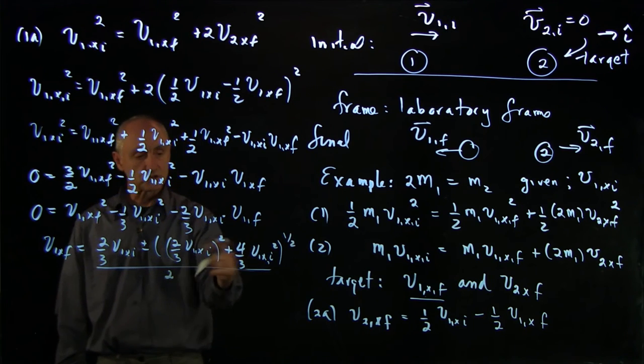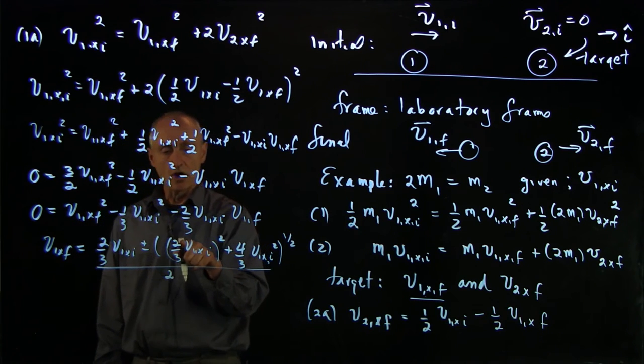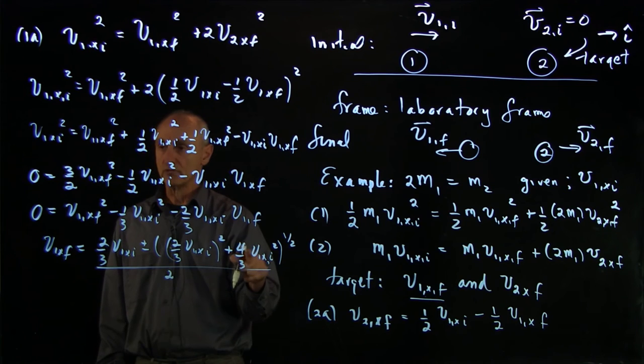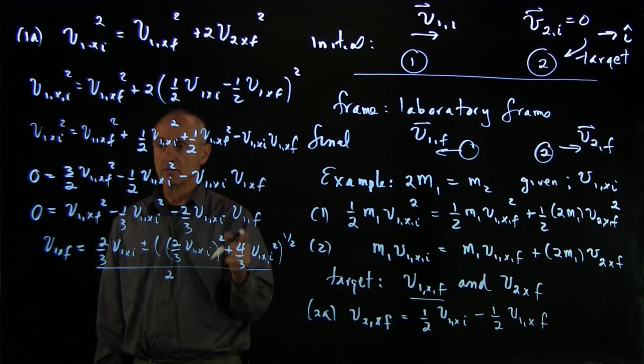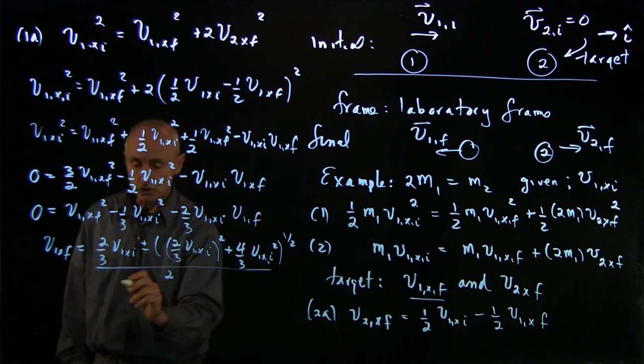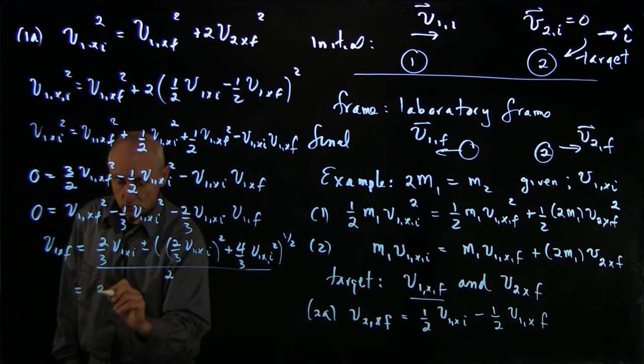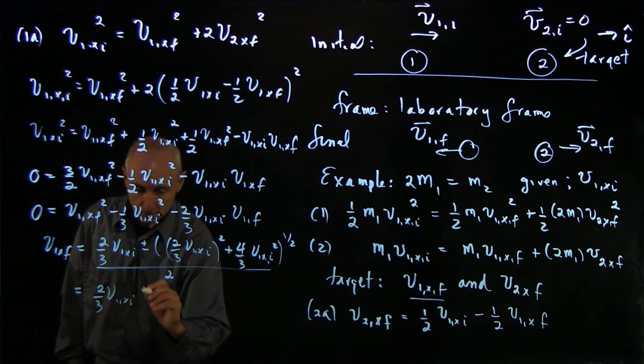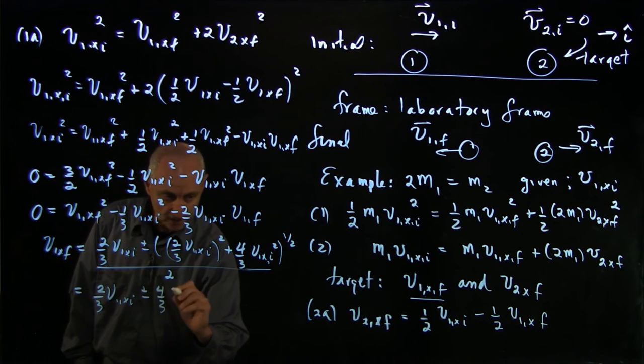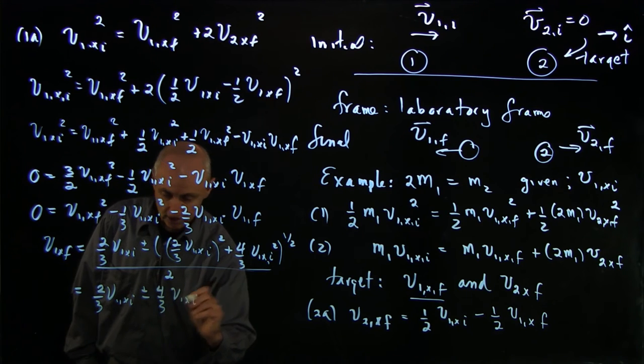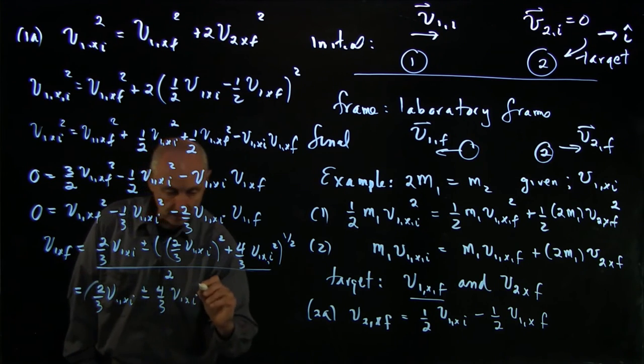Let's look at this factor. Here, this is 4/9 plus 4/3. 4/3 is 12/9, so that's 16/9, which is very convenient, because when you take the square root, that's 4/3. So we get equal to 2/3 v1x initial plus or minus 4/3 v1x initial divided by 2.